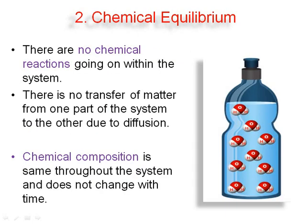The second is chemical equilibrium. In chemical equilibrium, there are no chemical reactions going on within the system. There is no transfer of matter from one part of the system to another due to diffusion. The chemical composition is the same throughout the system and does not change with time. In this diagram, we can see a closed system containing water vapor. The composition remains constant throughout, and therefore this system is in chemical equilibrium because there is no exchange of elements.